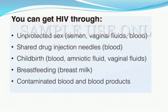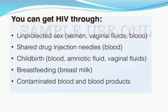You can get HIV through the following transmission routes: unprotected sex — 90% of HIV is transmitted through sexual contact — sharing drug injections and needles, childbirth, blood, amniotic fluid, vaginal fluid, breastfeeding, contaminated blood, and blood products. These are all the vectors through which AIDS or HIV virus is transmitted.